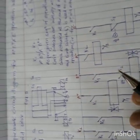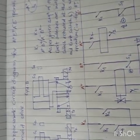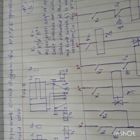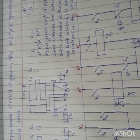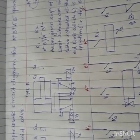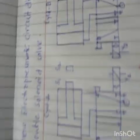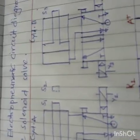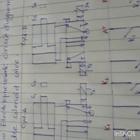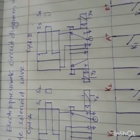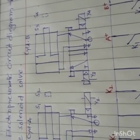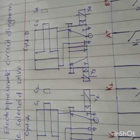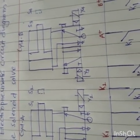Good morning. Draw the electromagnetic circuit diagram for A plus, B plus, A minus, and B minus operation using a 5 by 2 double solenoid valve. So four operations and we have to use the 5 by 2 double solenoid valve.